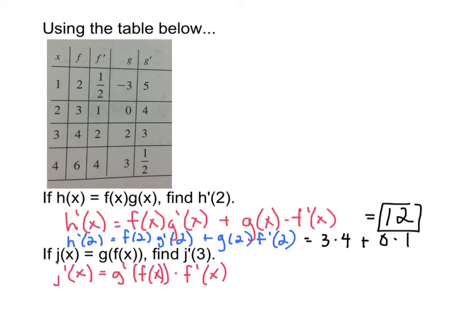j prime of 3 will be g prime of f of 3 multiplied by f prime of 3. f of 3 is right here, f of 3 is 4. So let me rewrite this as just g prime of 4. I'm just replacing the f of 3 with what that's equal to, which is 4. f prime of 3 is 2, so I'm going to have g prime of 4 multiplied by 2. And g prime of 4 is 1 half. So I have 1 half multiplied by 2, which is just 1.